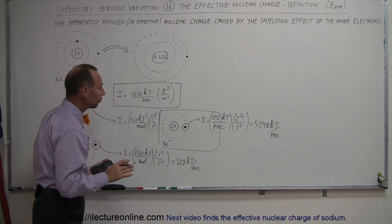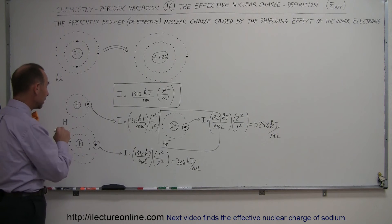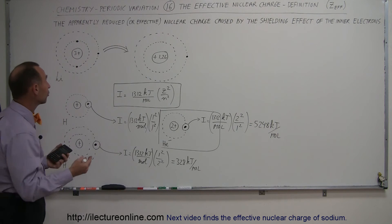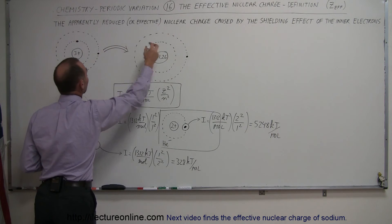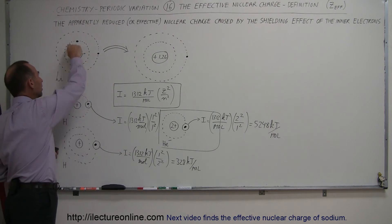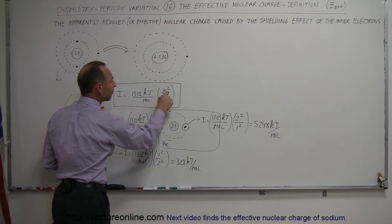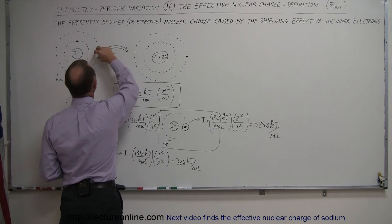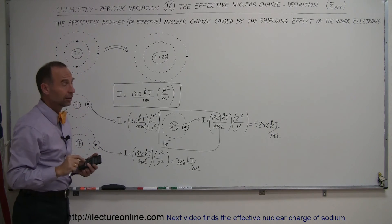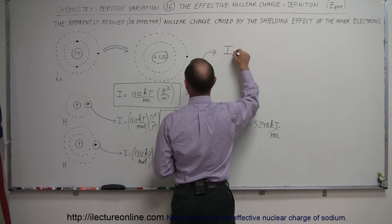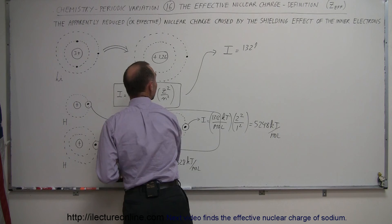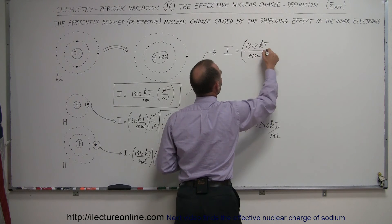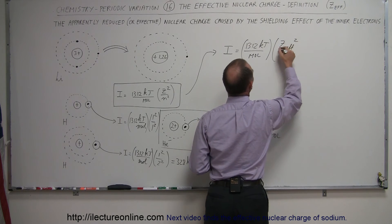It is relatively straightforward to calculate ionization energy when only one electron remains. But usually we are dealing with multiple electrons still present, and there is a shielding effect. We can still use the same equation, but instead of the actual nuclear charge we must use the effective Z — the effective nuclear charge. To find how much energy it takes to remove the outer electron from lithium while the other two remain, the equation becomes IE = 1312 × Z_eff²/n².